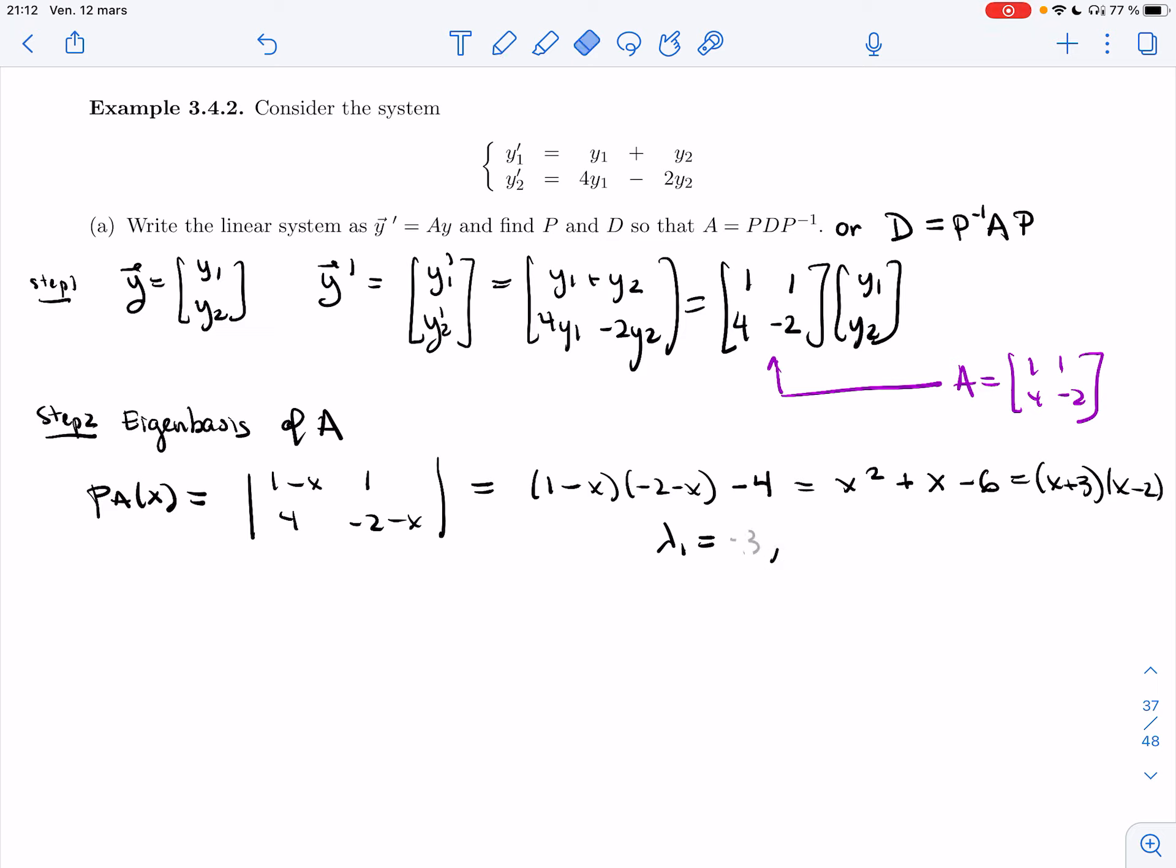So that's x minus 2 times x plus 3. So I have two eigenvalues. Actually, I have the opposite in my notes. Let me follow my notes, so we could use maybe a shortcut later on. So 2 and minus 3.